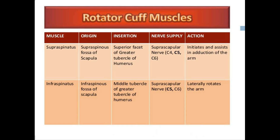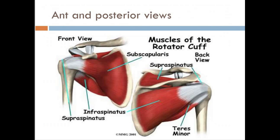The first cuff muscle is supraspinatus — it originates from the supraspinatus fossa of the scapula. This is the supraspinatus fossa and this is the infraspinatus fossa, where the supraspinatus and infraspinatus each take their origin.